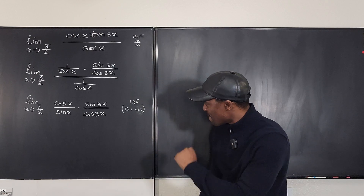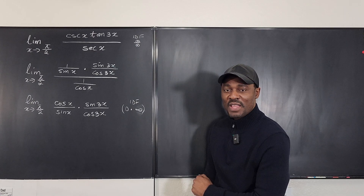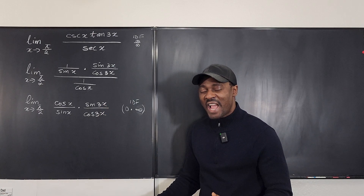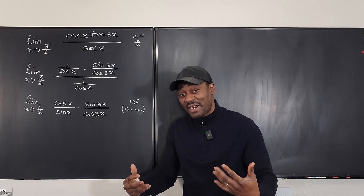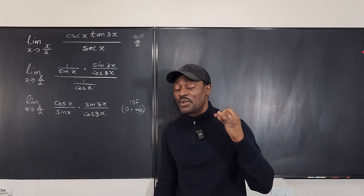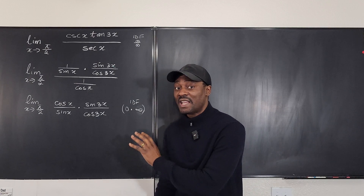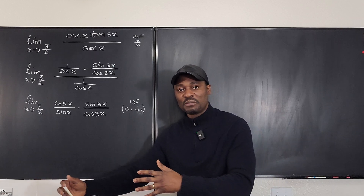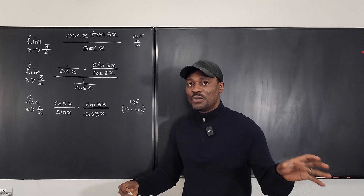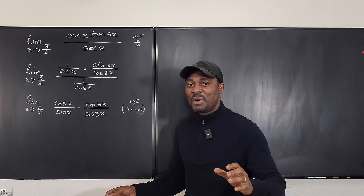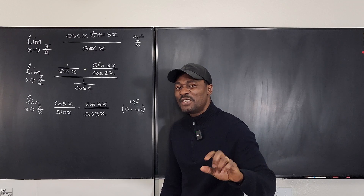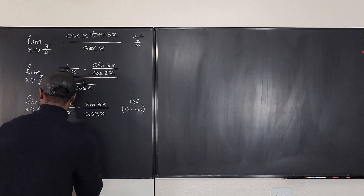So what can we do? We need to recall our trig identities — specifically the triple angle formulas. You should know the double angle and triple angle identities because sometimes that's the only thing that saves you. You can derive them from scratch using the angle sum formula: write sin(3x) as sin(2x + x) and work from there.